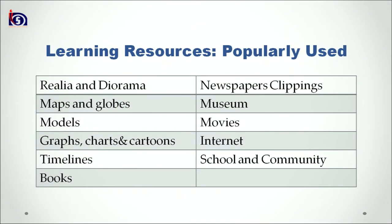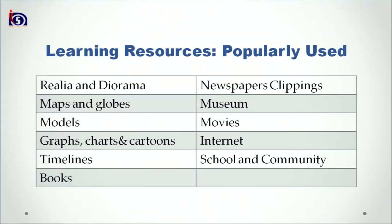Moving on to learning resources popularly used in the teaching of social sciences: we have relia and diorama, which relate to real things usually used in teaching history; maps and globes; models; graphs, charts and cartoons; timelines; books; newspaper clippings; museums; movies; internet; and school and community. These are the different kinds of learning resources popularly used in the classroom.